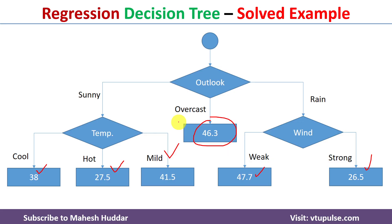Once all calculations are done, we get the final regression tree. This is how we can build a regression tree whenever we have a target variable with real values. I hope the concept of regression trees in machine learning is clear. If you like the video, do like and share with your friends, press the subscribe button for more videos, and press the bell icon for regular updates. Thank you for watching.